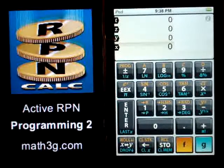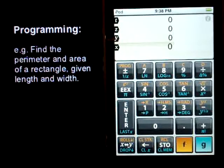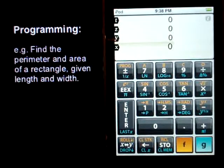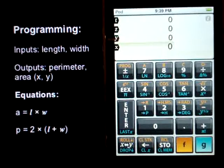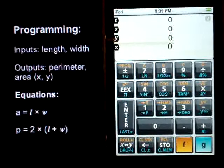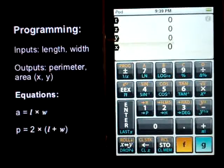Let's get started. Find the perimeter and area of a rectangle given length and width. We've got two inputs, length and width. We've got two outputs, perimeter and area. The equations are area is equal to length times width, and perimeter is equal to 2 times length plus width.